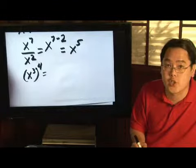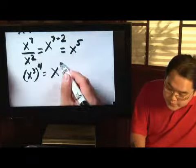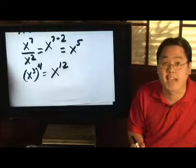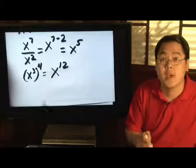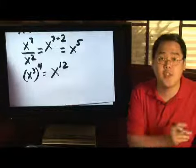So, three times four is obviously going to give you twelve, and so as a result, you're going to have x to the twelfth power. So, I'm Jimmy, and these are some operations involving exponents.